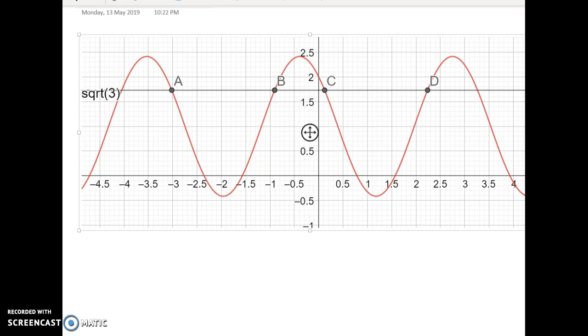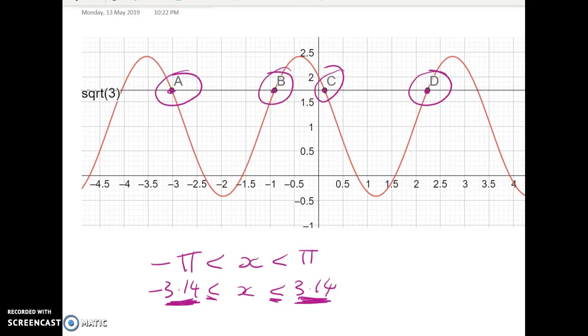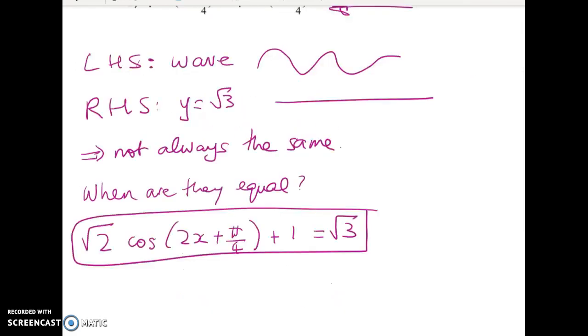First we're going to find the general solution. That gives me a formula for all of the points going on forever in both directions that make this a true statement. And then we have to find particular values between negative π and π, which is negative 3.14 and 3.14. You can see by looking that what we want to find for our particular solutions are these four values. And it's fine to check them on the calculator, but we're going to get there with some algebra as usual. So let's go ahead and solve this.